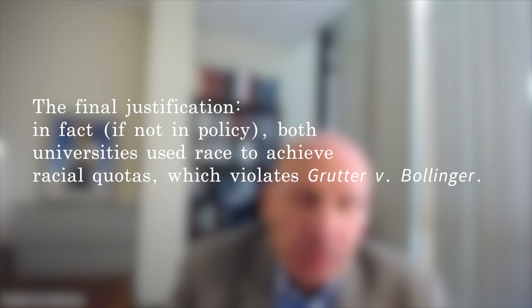And then finally, the court observed that in fact, if not in policy, both universities were using race to achieve quotas or in some sort of mechanical way. They pointed out that the percentage of African-American admittees had fluctuated within a really narrow band around 10%, and similarly with Hispanic admittees and Asian admittees — who had also fluctuated within a relatively narrow band in the low 22–23%. So the use of a quota system or mechanical measures in that way violated Grutter, and was a fifth basis for striking down the admissions programs.